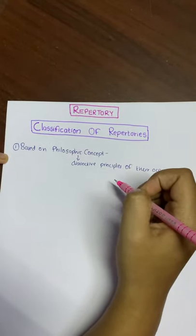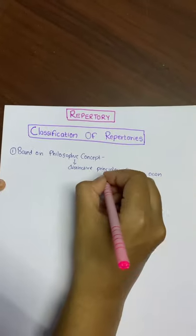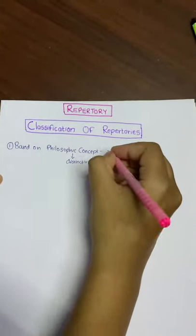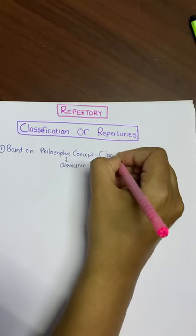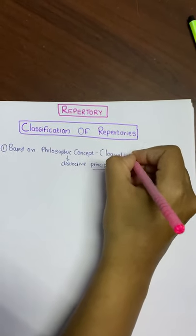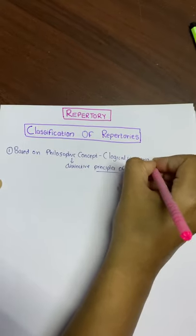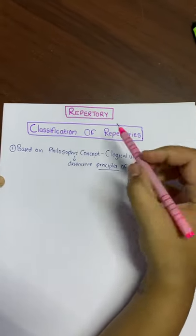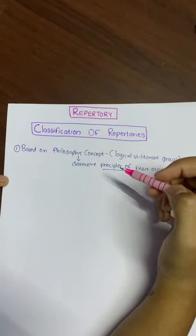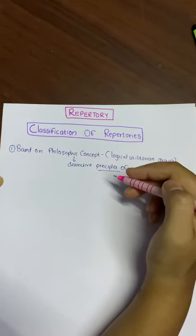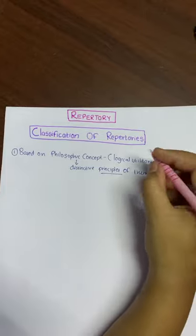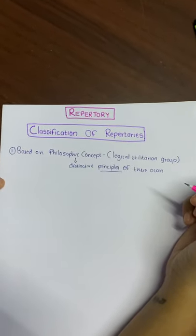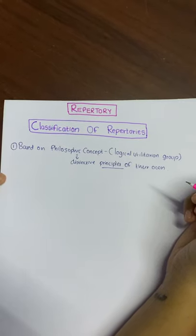These are the repertories which have their own philosophical background, and this group of repertories is also called the logical utilitarian group. The cases to be repertorized through these fit within the principles of the philosophical concept. Even to understand these repertories, their philosophical concept must be known.